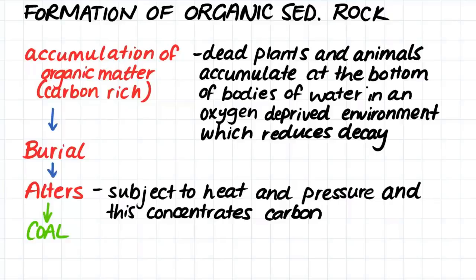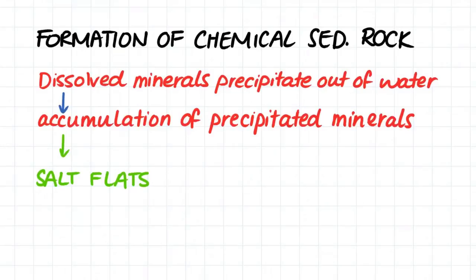Coal is combustible and we dig it up from the ground today to burn it to create electricity. And finally, chemical sedimentary rock forms when dissolved minerals are forced to precipitate out of the water and then accumulate at the bottom of bodies of water. An example of this today is salt flats, which form from the precipitation of salt out of bodies of water as they dry up.